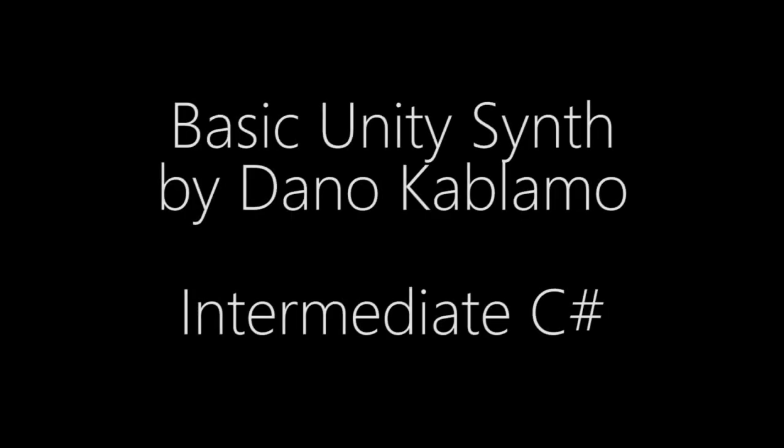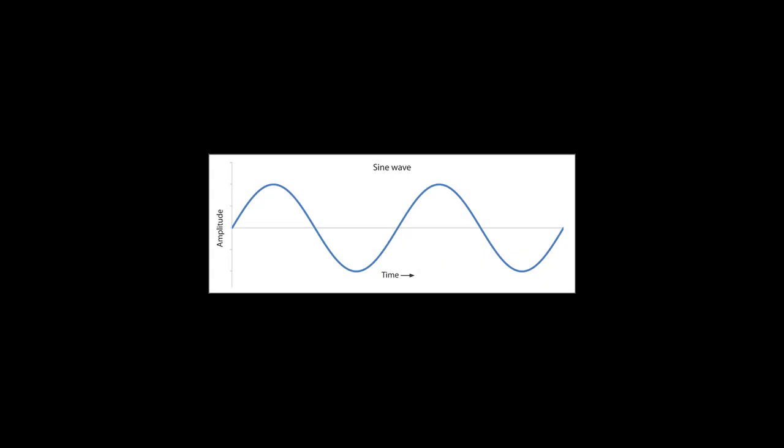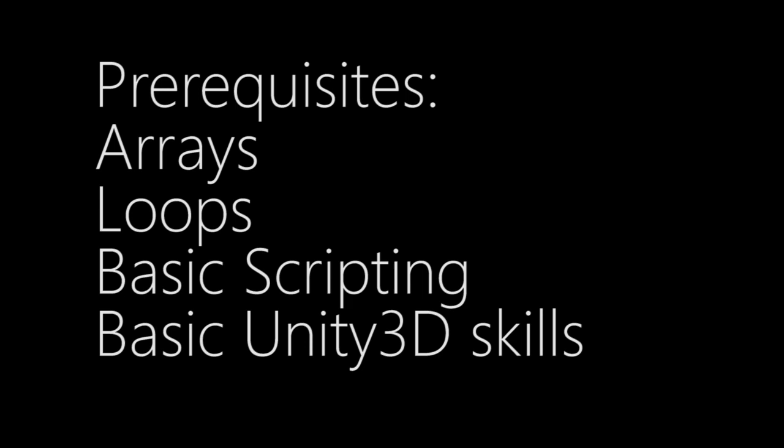Today we're going to be making one of the most basic versions of a synthesizer possible in Unity. We will do this by utilizing Unity's built-in OnAudioFilterRead and MathF.Sin methods to create a simple sine wave that we can hear. This is an intermediate level project, so you should be familiar with arrays and loops, and I'm also assuming that you have at least some understanding of scripting in C# and working with Unity.